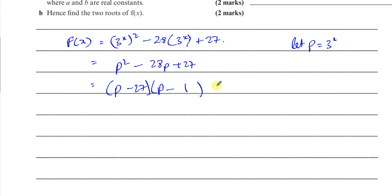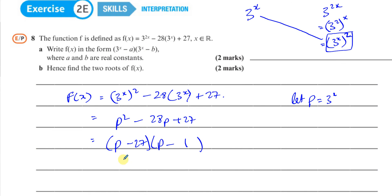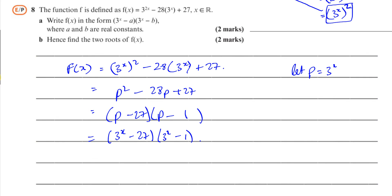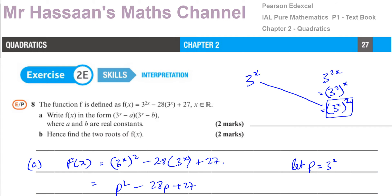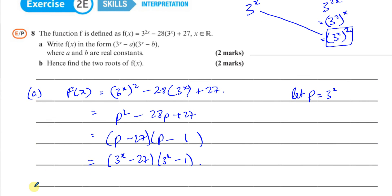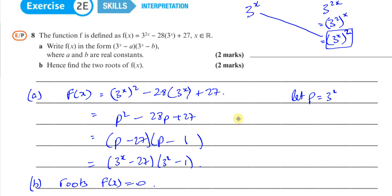We've factorized it, but we want to write it back in the required form. We know that p is 3 to the power of x, so we end up with (3^x − 27)(3^x − 1). So there we have finished part a. Then, once we have done that, 'hence' means using what you found — we're going to use what we found to find the roots of the equation. Remember, the roots of an equation are when the function equals 0 — the x value when f(x) = 0. The function is now factorized, and that's how we solve it.